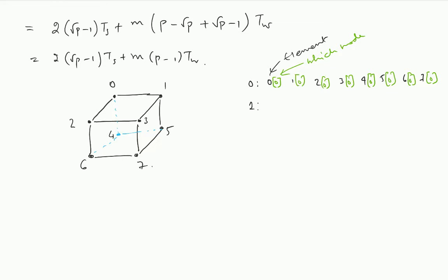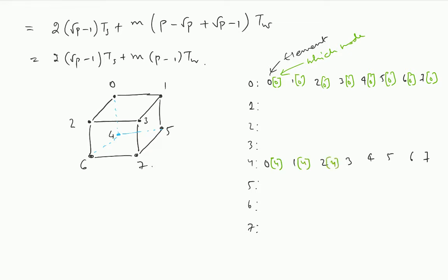What am I going to have on nodes 1, 2, 3, 4, 5, 6, and 7? I am not going to write all of them down but you will get the idea. Let us look at what would be there on node 4. You will have 0, 1, 2, 3, 4, 5, 6, and 7, but I am going to put the index 4 over here to say that this is the element on node number 4.